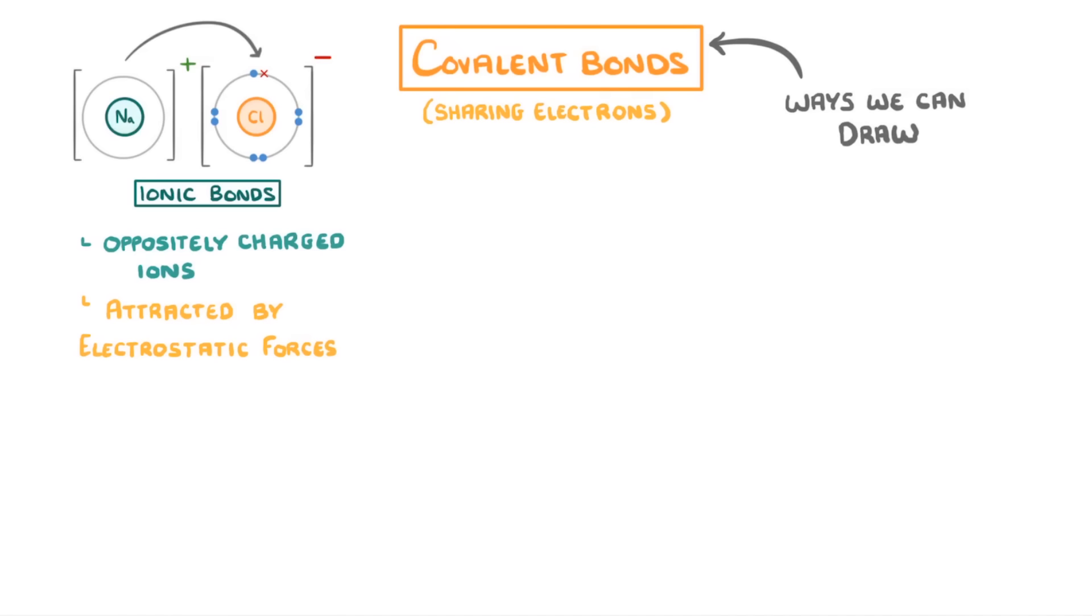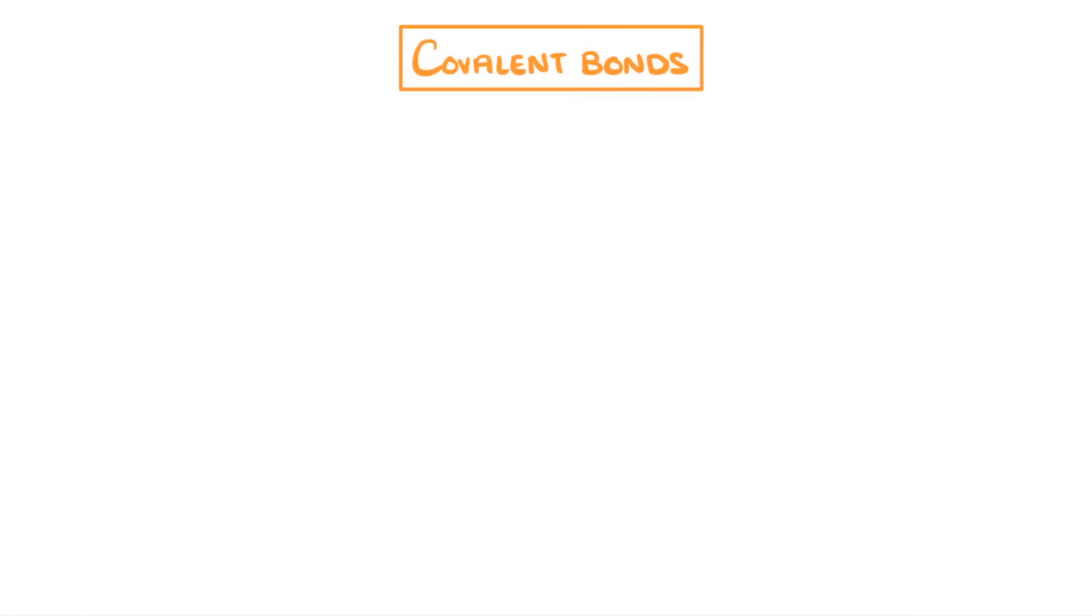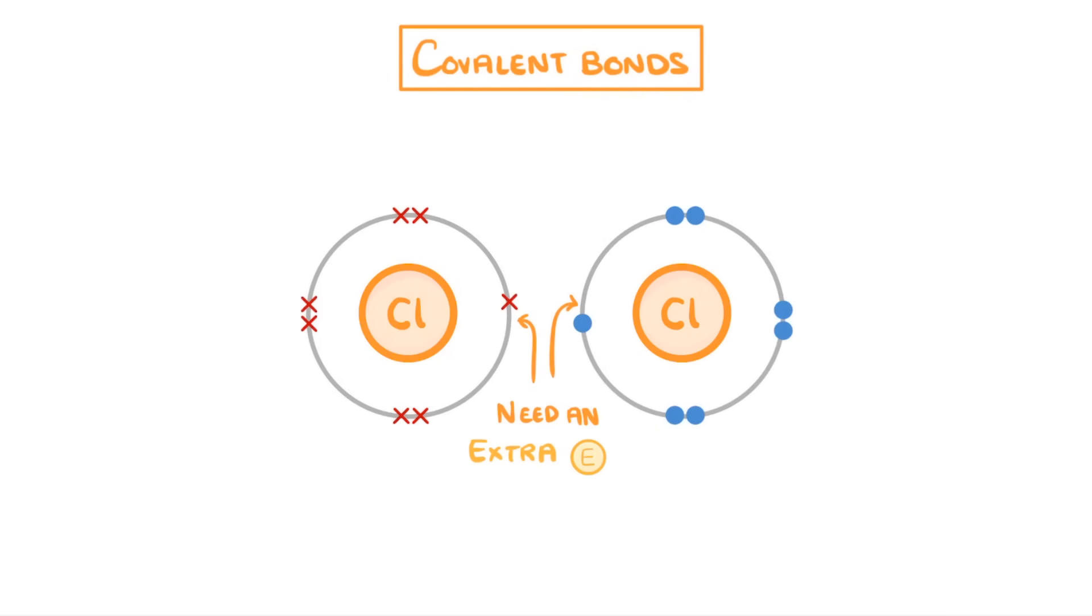And the reason that they transfer these electrons is so they both get a full outer shell. Now this works great when one of the atoms has too many electrons and the other one has too few, like with sodium and chlorine. But what about when we have two non-metal elements, like two chlorine atoms? Well in this case both of them need an extra electron to get a full outer shell, so giving electrons to each other isn't going to help.